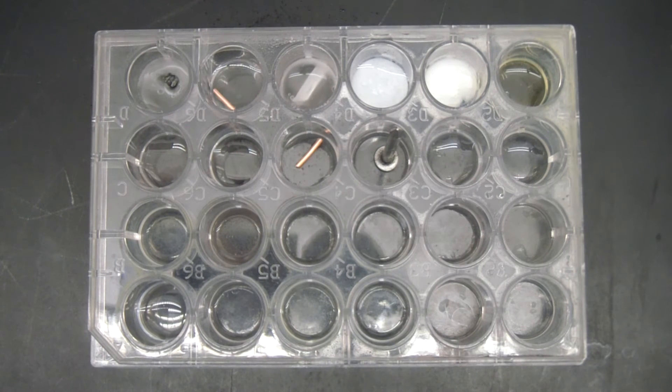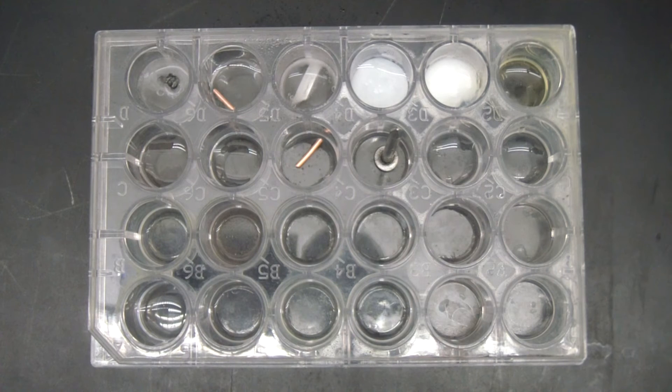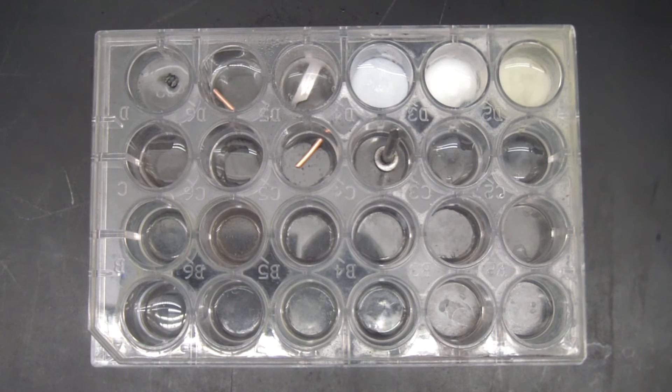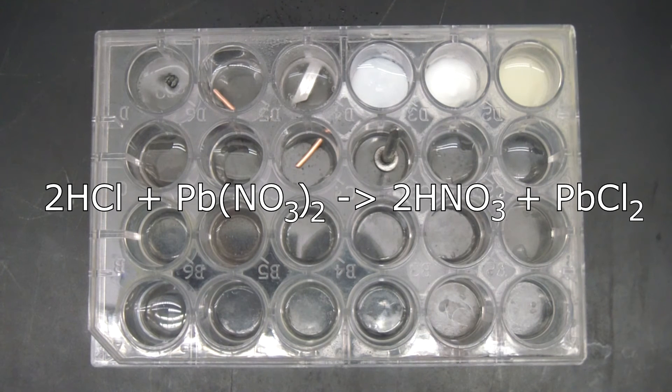Okay, and next to that, more hydrochloric acid, but this time we're going to add some lead nitrate, which gives us a different kind of white precipitate, but ultimately the same kind of thing that follows this particular equation.